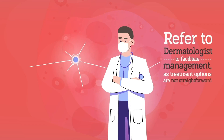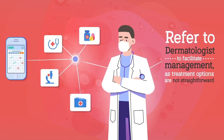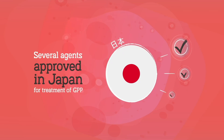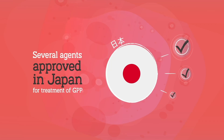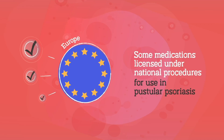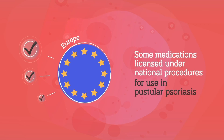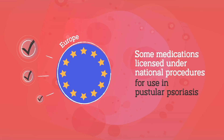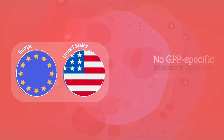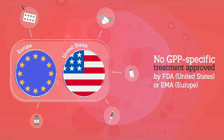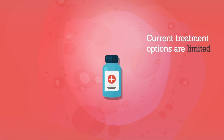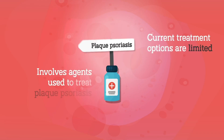Individuals should be referred to a dermatologist to facilitate management, as treatment options are not straightforward. Several agents are approved in Japan for the treatment of GPP, and in Europe some medications licensed under national procedures can be used in pustular psoriasis, such as methotrexate or corticosteroids. However, no GPP-specific treatment has been approved by the FDA in the United States or the EMA in Europe.